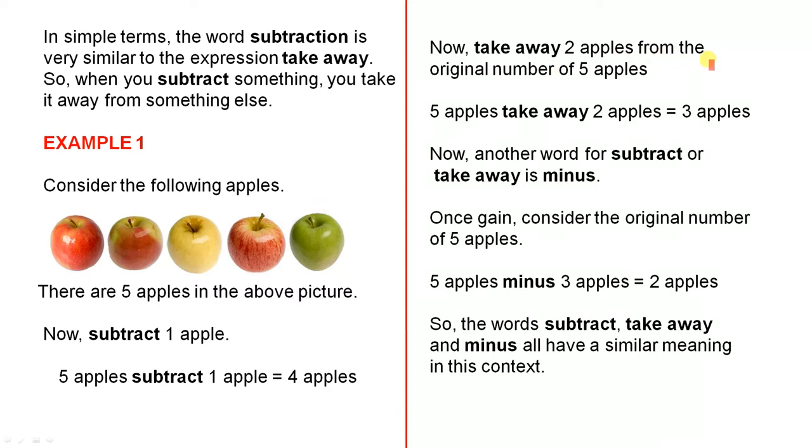Now take away two apples from the original five apples. Five apples take away two apples equals three apples. This time pretend you take away the last two. So I'll leave that marker there. The apples to the right of that marker don't exist anymore. Only the apples to the left. There are only three left because we have taken away the two apples to the right.